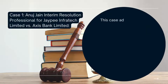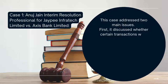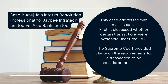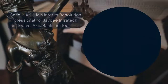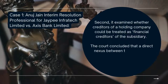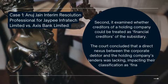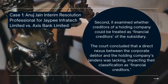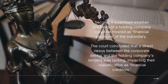Case No. 1: Anujain, Interim Resolution Professional for JP InfraTech Ltd vs. Axis Bank Ltd. This case addressed two main issues. First, it discussed whether certain transactions were avoidable under the IBC. The Supreme Court provided clarity on the requirements for a transaction to be considered preferential, undervalued or fraudulent. Second, it examined whether creditors of a holding company could be treated as financial creditors of the subsidiary. The court concluded that a direct nexus between the corporate debtor and the holding company's lenders was lacking, impacting their classification as financial creditors.